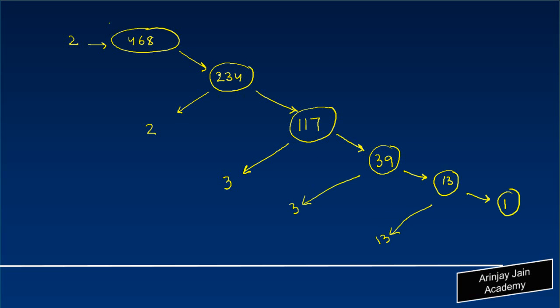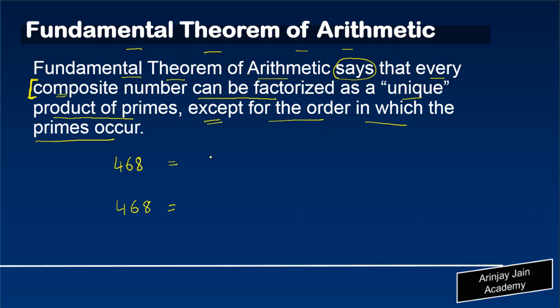Or in other words, I can also write 468 as 2 times 2 times 3 times 3 times 13, or simply, 2 squared into 3 squared into 13. So we will have 468 as 2² × 3² × 13.